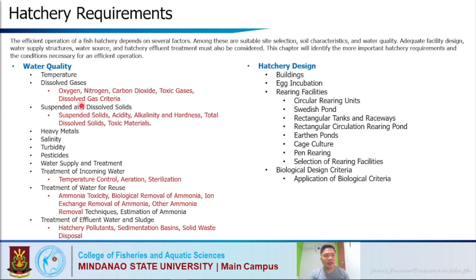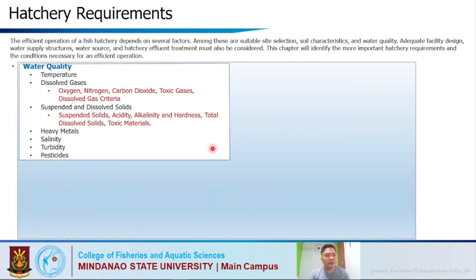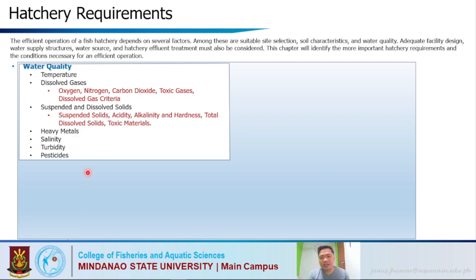In this lecture we will be focusing on water quality: temperatures, dissolved oxygen — namely oxygen gas, nitrogen gas, carbon dioxide, toxic gases, and dissolved gas criteria. We will also discuss suspended and dissolved solids including acidity, alkalinity, hardness, total dissolved solids, and toxic materials. We will also touch on heavy metals, salinity, turbidity, and pesticides that are vital to the growth and development of our cultured species.